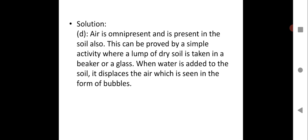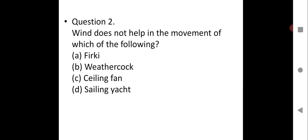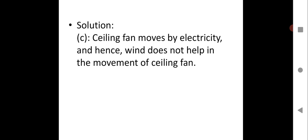Question two: Wind does not help in the movement of which of the following? Options: a pinwheel (firki), a weather vane, a ceiling fan, or a sailing boat. You know the role of air. The correct answer is C — ceiling fan — because a ceiling fan moves by electricity, and wind does not help in its movement.